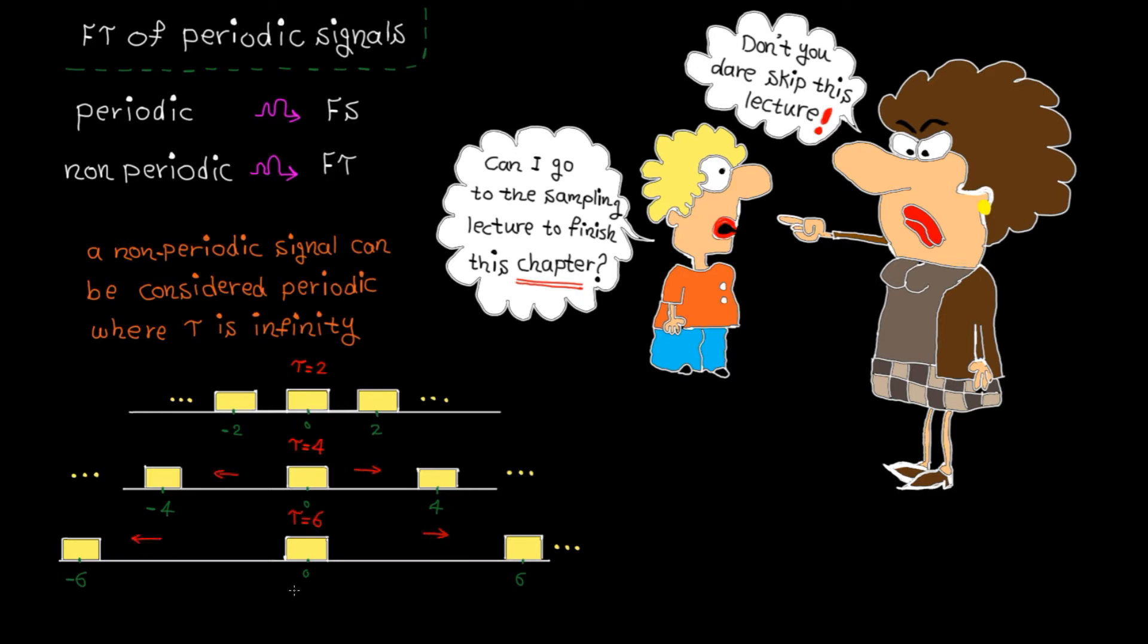Now, let's assume the period is infinity. This means the boxes will repeat at infinity. This suggests a non-periodic signal can be considered periodic when T is infinity. This simple assumption, which intuitively makes sense, will help us to find the relation between Fourier transform and Fourier series.